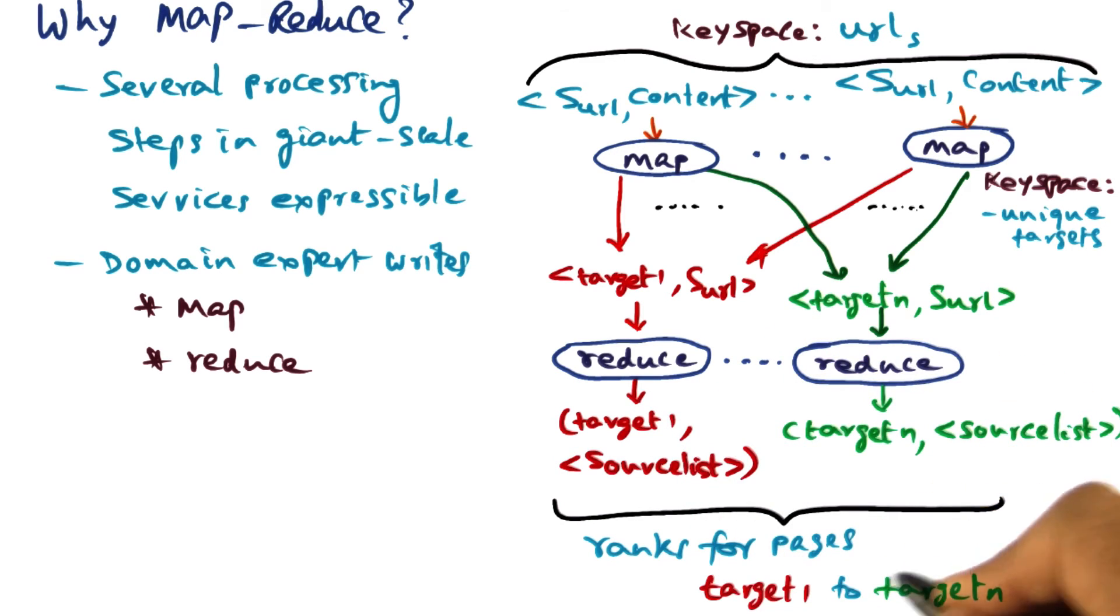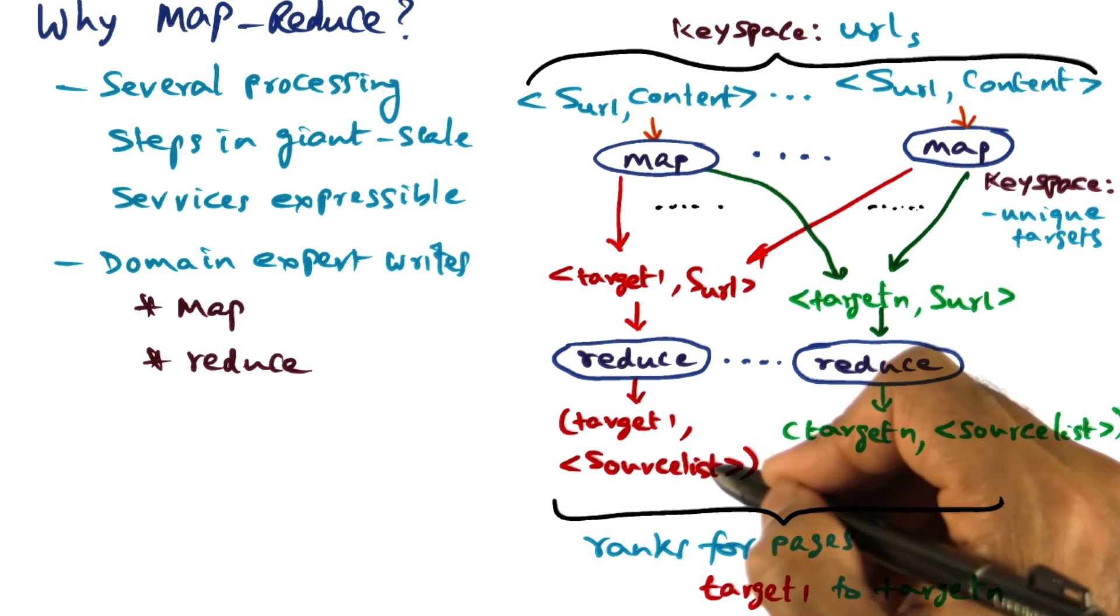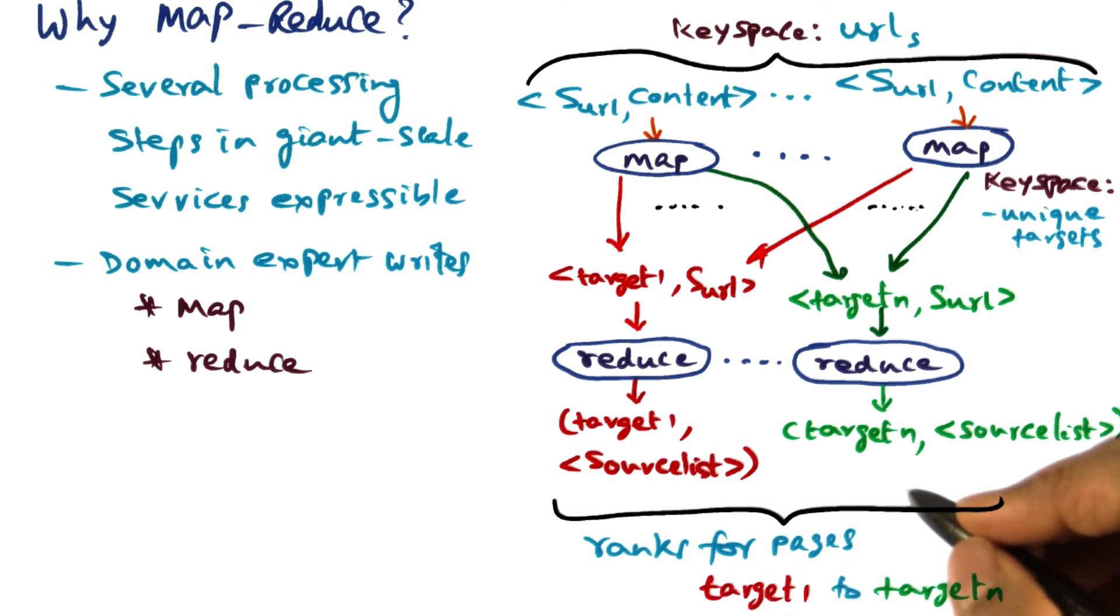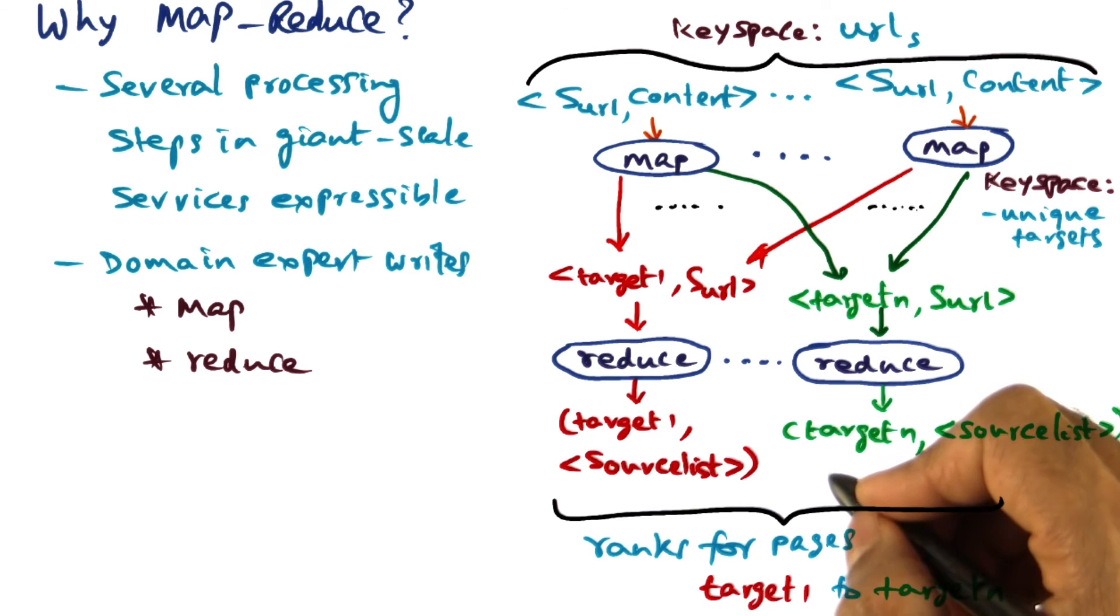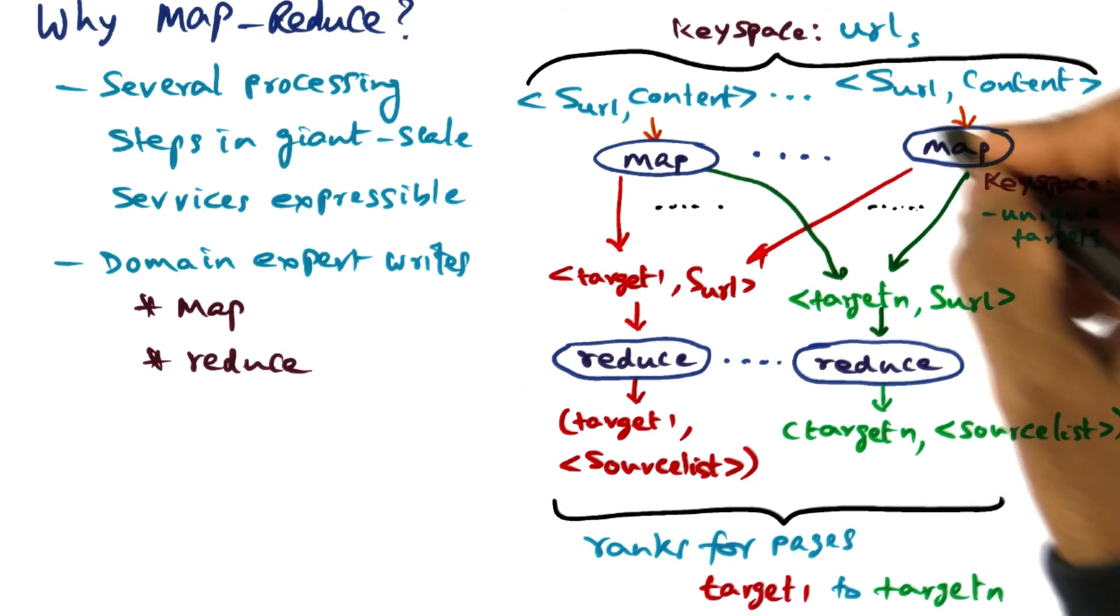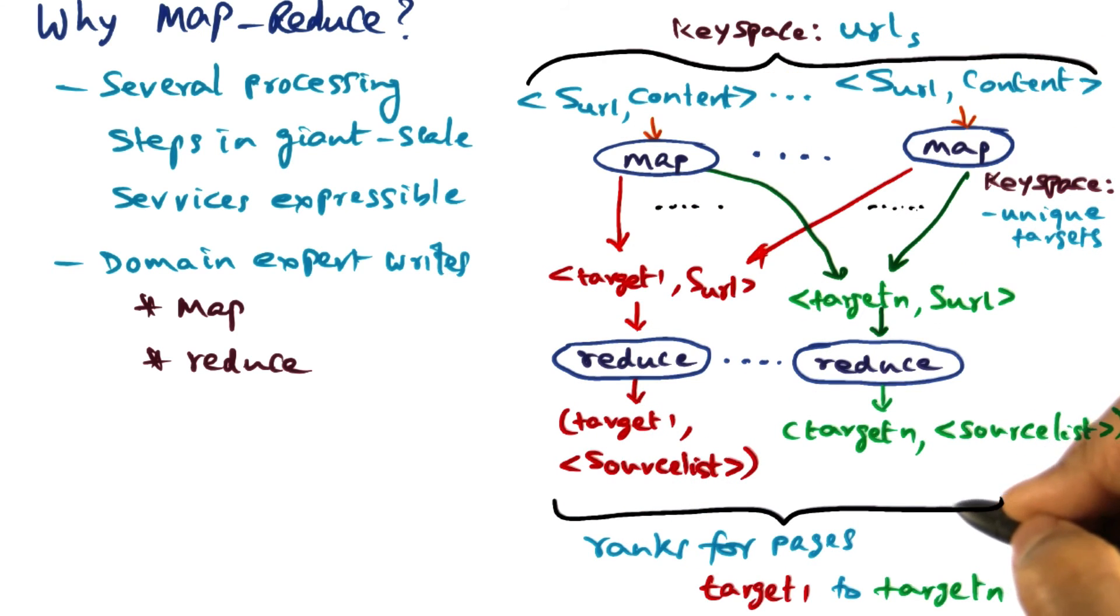So we're able to rank the target web pages, one through n, based on the number of source web pages that contain that particular target. And that's what page ranking is all about. So I'm giving you yet another example of how this MapReduce functionality can be applied for an application such as page ranking.